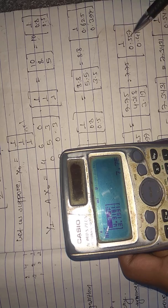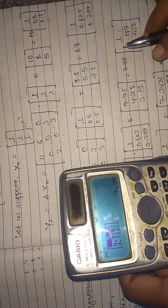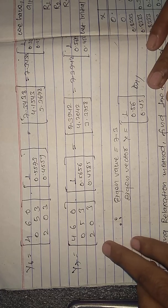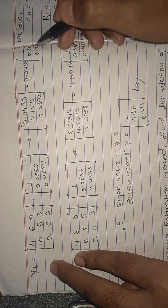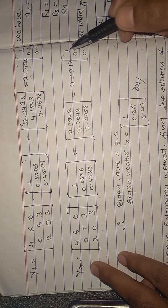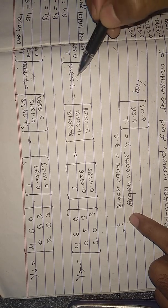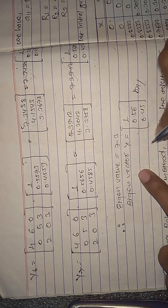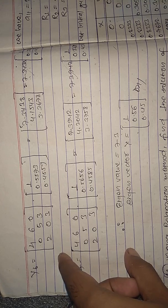We repeat this process until the last two iterations give the same value. In the 6th iteration we have 7.3430 with eigenvector 1, 0.565, and 0.45. In the 7th iteration we have 7.3942 with eigenvector 1, 0.56, and 0.456. Since these values are the same, the eigenvalue is 7.3942 and the eigenvector is [1, 0.56, 0.456]. Thank you.